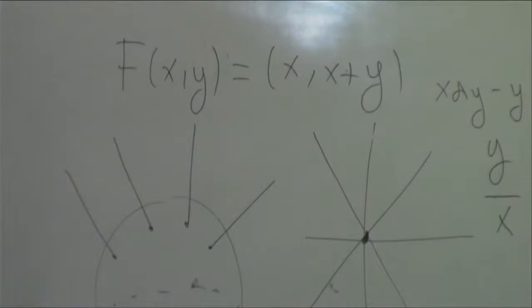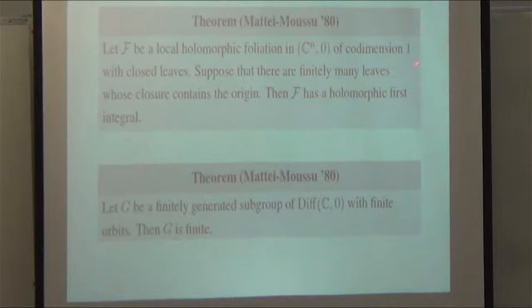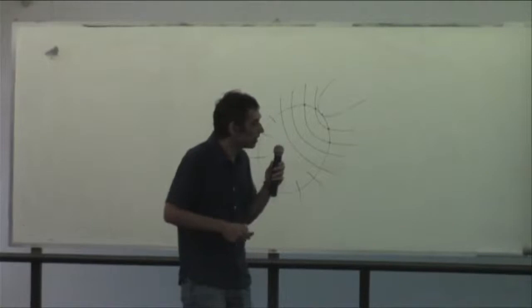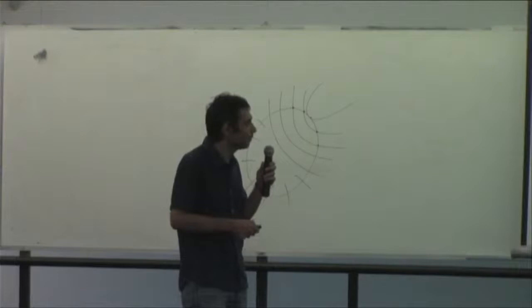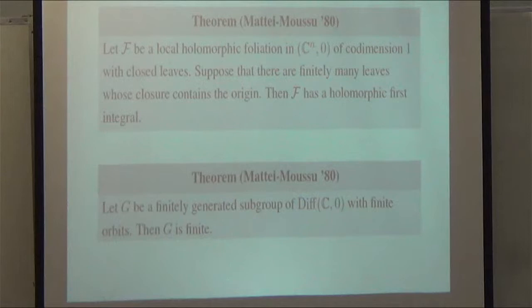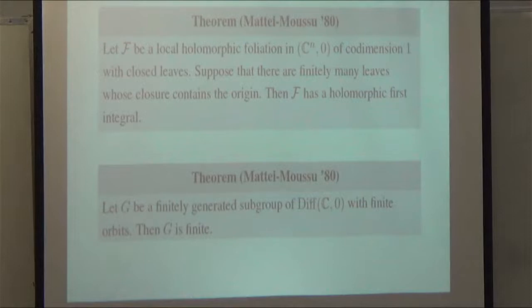One of the main ingredients in the proof of the stability result is that if you have a finitely generated subgroup of germs of holomorphic diffeomorphisms in one variable that has finite orbits, then it is necessarily a finite group. This is obviously not true in dimension two: the group generated by the translation map (x, y) ↦ (x, x + y) has finite orbits locally but is clearly not finite because the map has infinite order.